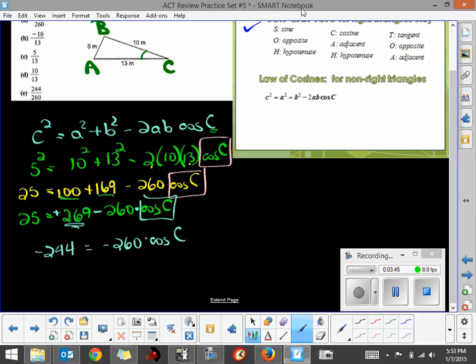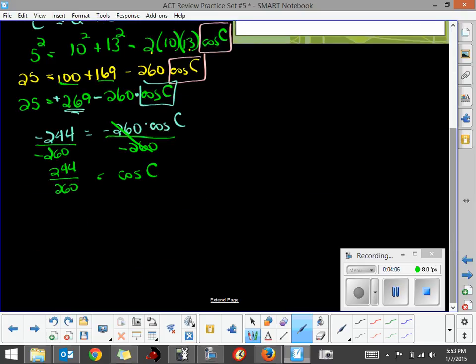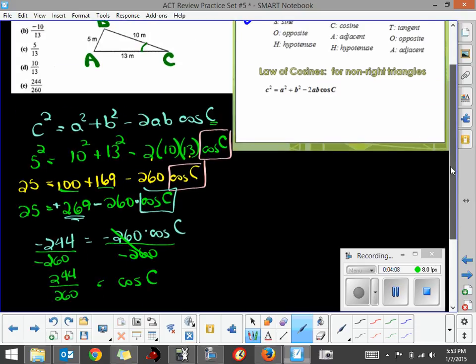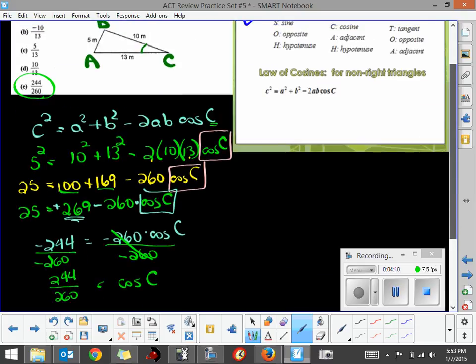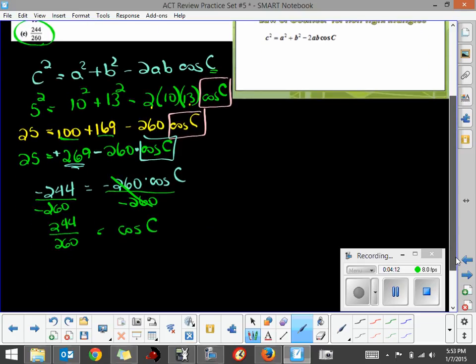Now, to get rid of multiplying by negative 260, we divide by negative 260, and that will give us our cosine of C completely by itself. So 244 over 260. I'm going to get rid of both negatives because negative divided by negative is positive. This is the answer that they have for your choices here, 244 over 260.